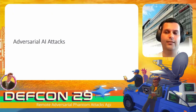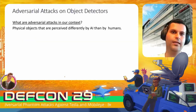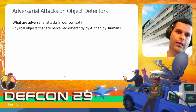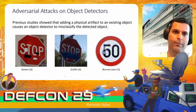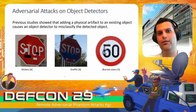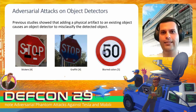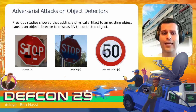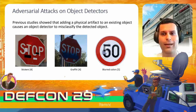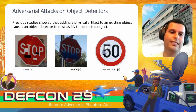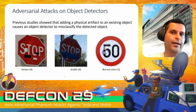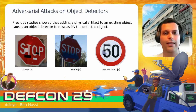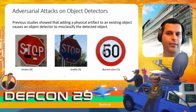Adversarial AI attacks are physical objects that are perceived differently by AI than by humans. Previous studies demonstrated that object detectors misclassify a detected object if attackers add a physical artifact to it. For example, the physical object can be stickers, graffiti, or even printed bold colors, all of which caused object detectors to misclassify road signs — for example, a stop sign as a speed limit, or one speed limit as another type of speed limit.